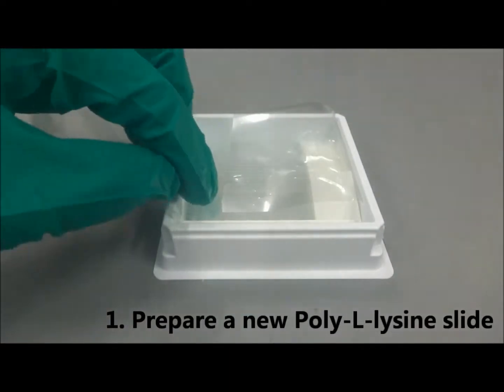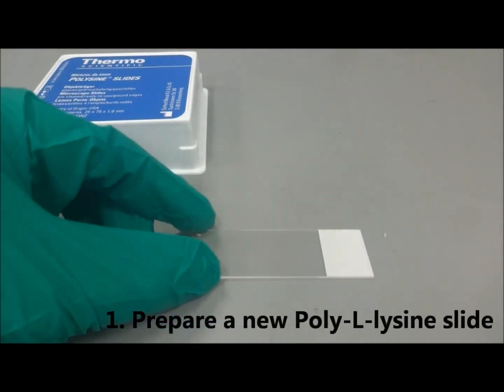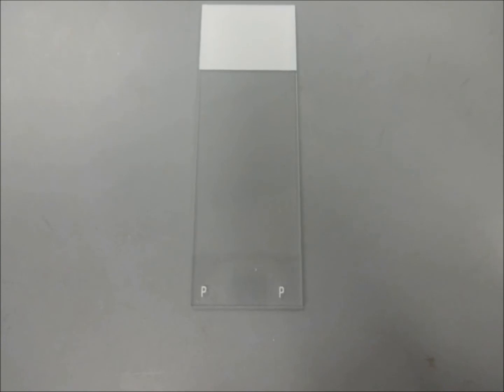First, prepare a new poly-L lysine microscope slide. The side labeled with the letter P should be facing up. This is the side that is coated with poly-L lysine.